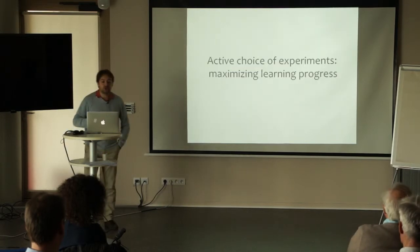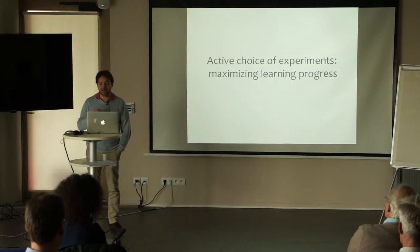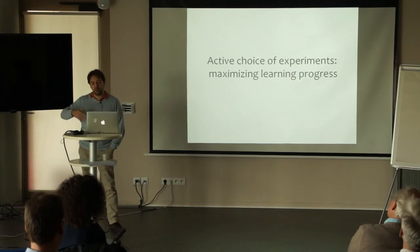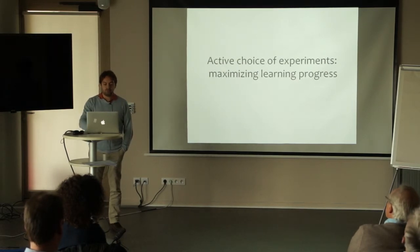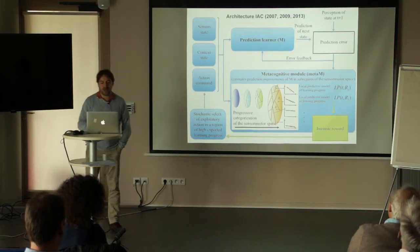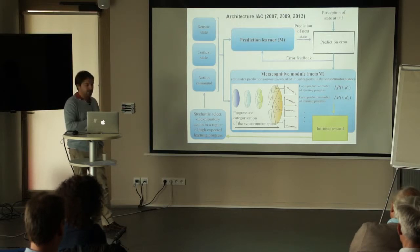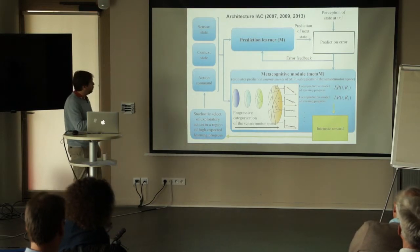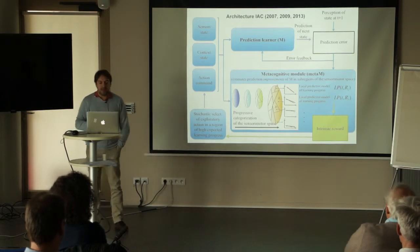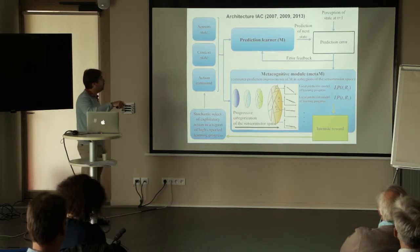The question is: how does the robot choose which experiment to make at any given moment? It chooses actions like a little scientist — selecting experiments it thinks can improve its own predictions, provide new information, or make it progress in learning. The architecture includes a standard prediction learning machine that learns to predict the consequences of actions taken by the robot in certain context states. After predicting, the robot does the action, observes the results, measures the prediction error, and updates the model of the sensory motor contingency.